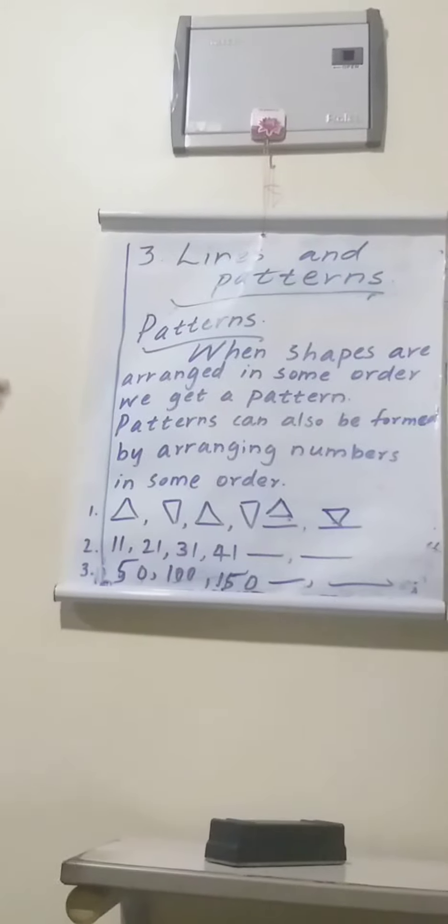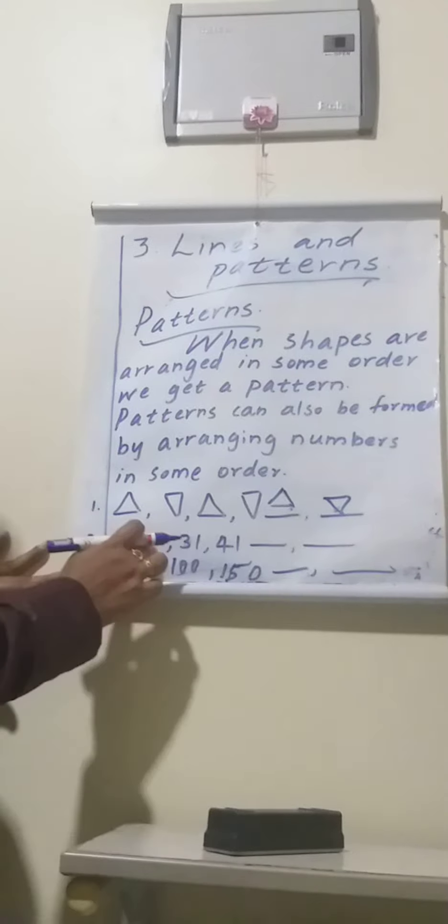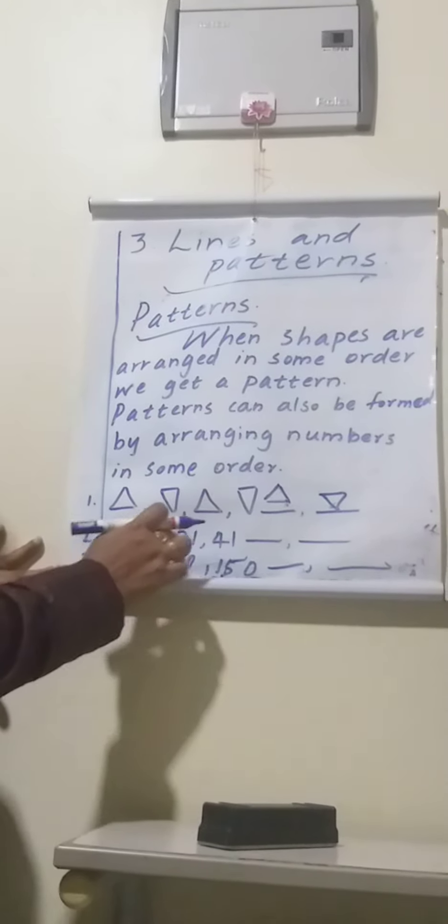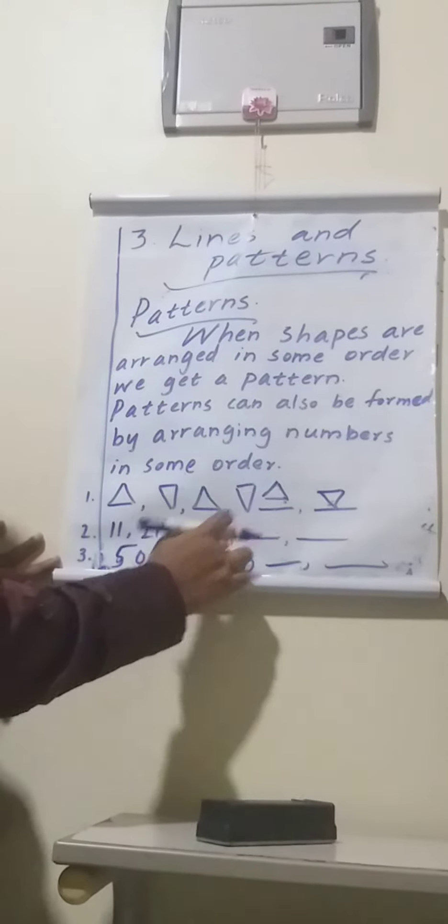This repeats. Next, numbers. Arrange the numbers in some order. First 11, then 21—10 increase. Then 31—again 10. Then 41—again 10 increase.